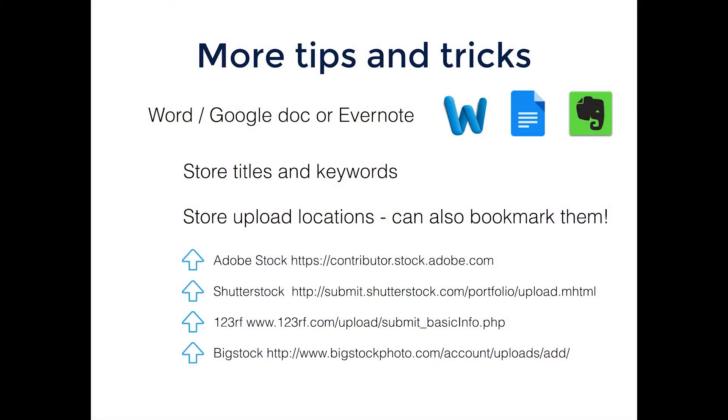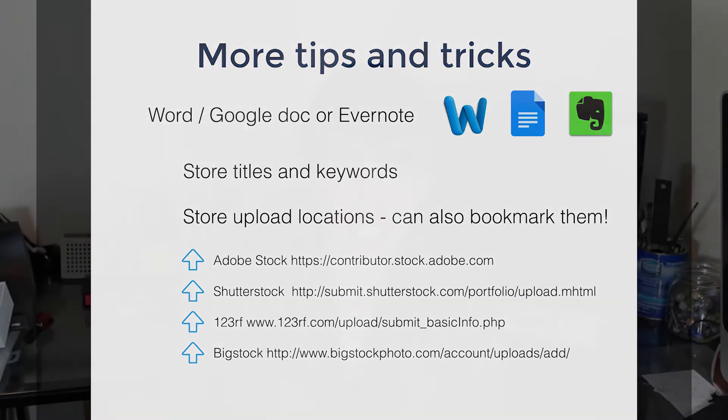Another thing I really recommend doing is putting all of your titles, your descriptions, and your keywords all in one document. That way you can just do a file find or a search, so you can find the original easily and use whatever keywords you need. I also use a Word doc, Google Doc, or Evernote for storing my upload locations. All of these stock websites are very different, and I'm a member of about 11 or 12 of them. Instead of trying to find the place in these sites where you upload your images, I've just found it once and bookmarked it, or put it in a Word doc.